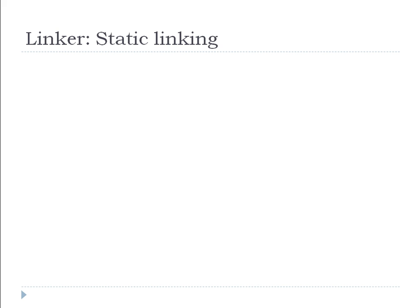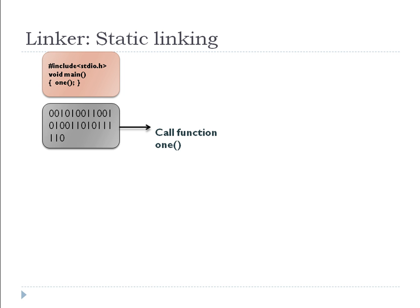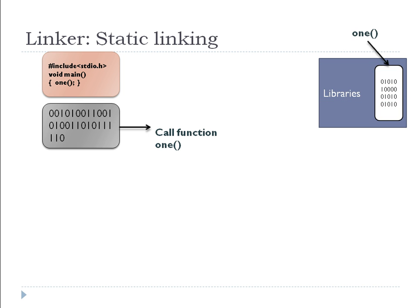Let's see what static linking is. Say this is our program, and in this program we have called a function — function 1. We are considering this function actually belongs to some other library, so we are using a function from another library through static linking. When we compile our program, at the end we get binary code, or object code. This is the library in compiled format, and that function 1 will also be there in compiled format. For better understanding, I have denoted that function separately here — this is the code for function 1.